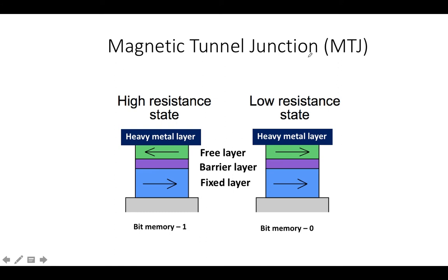In an MTJ there are three kinds of layers: free layer, barrier layer, and fixed layer. From the figure, the bottom ferromagnetic layer is the fixed layer — fixed means your magnetization direction is fixed. Magnetization direction is the direction of your magnetic pole. In the middle you have the barrier layer, which is non-ferromagnetic, meaning without any magnetization. The top layer is your free layer.